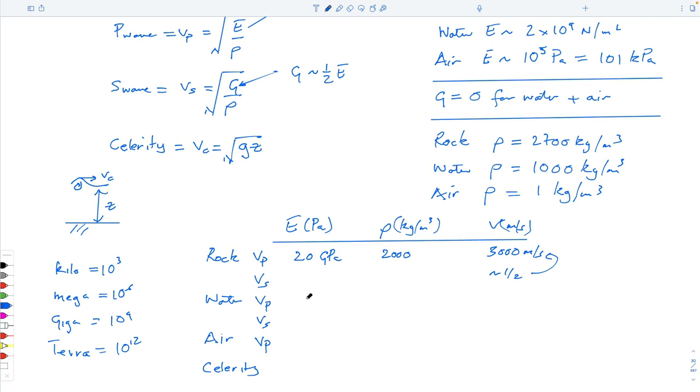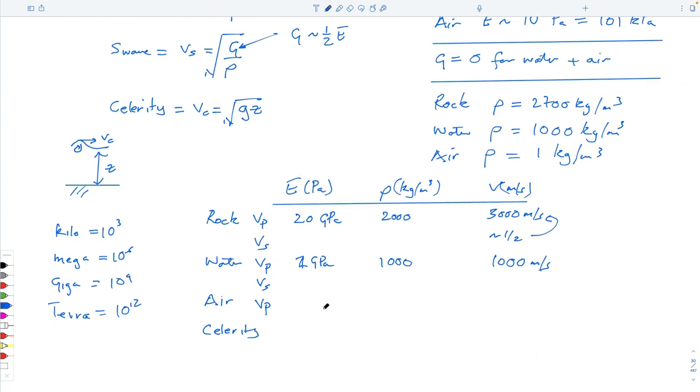And air, V_P, you know it's 10 to the 5 pascals, 101, right? It's 1 kilogram per meter cubed. And it works out to be something like 300 meters a second. And so, 1 meter a second equals 2 miles an hour. So, this is about 600 miles an hour, the speed of a plane.